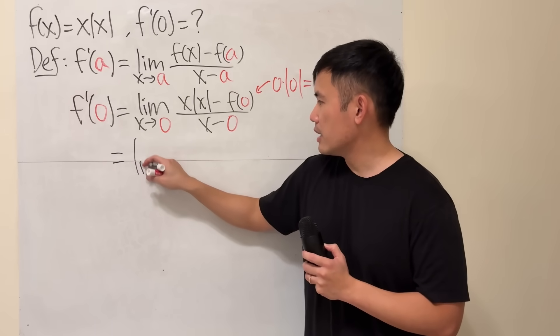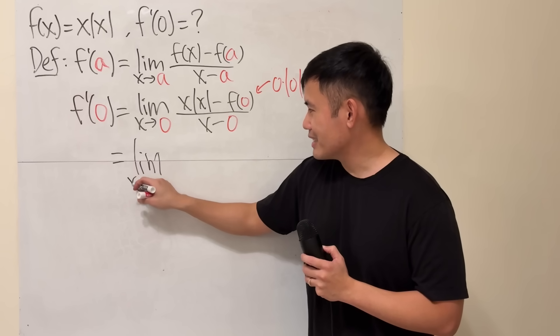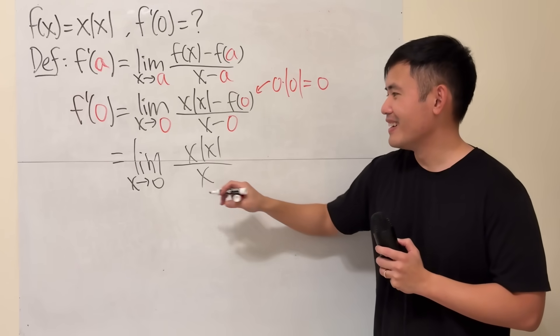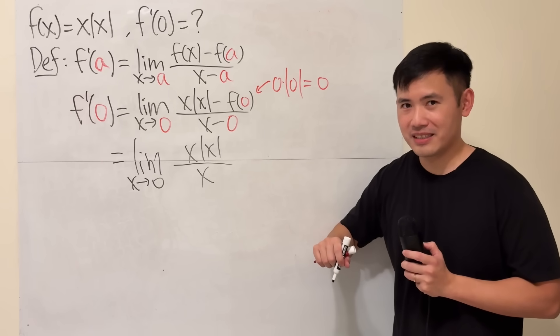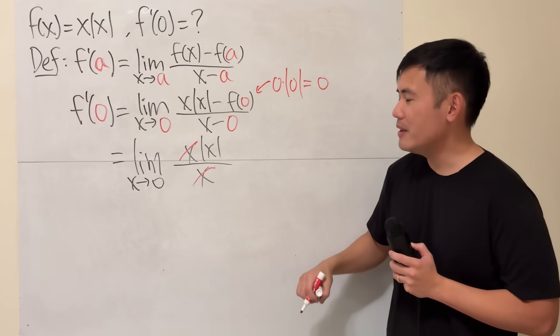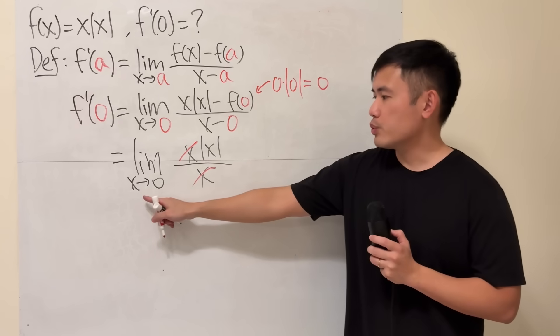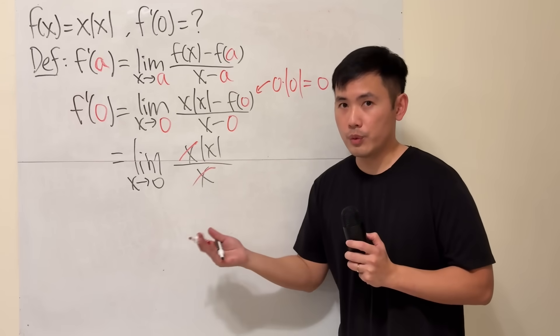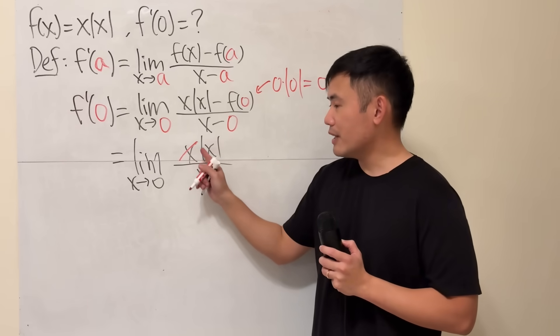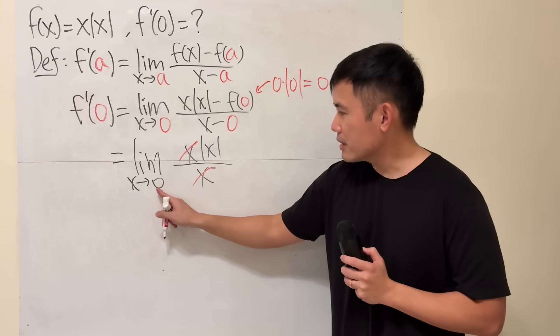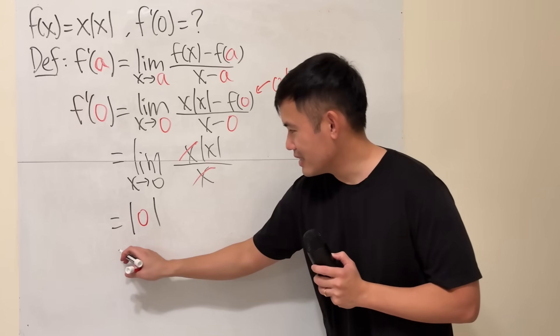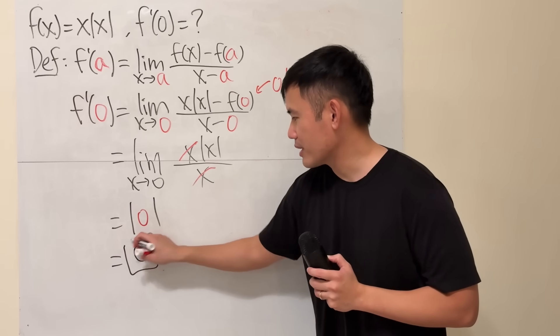So this is the limit, x approaching 0 of x, absolute value of x, over x. Now, what can we do next? Can we cancel the x? Yes, we can cancel the x legitimately. And if you want to be technical right here, because when we have x is approaching 0, when we do limits, x is not exactly 0. So cancelling out this is totally fine. And now we just have absolute value of x. Plugging 0 into here, we get absolute value of 0, and the answer is indeed 0. So this right here is the answer.